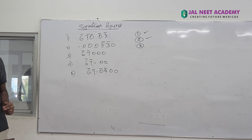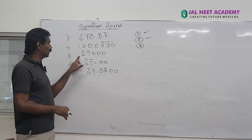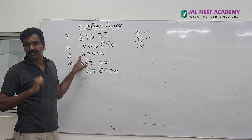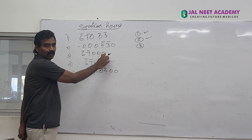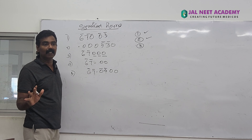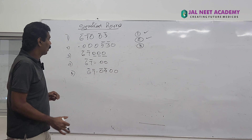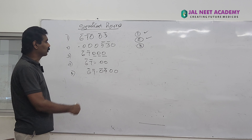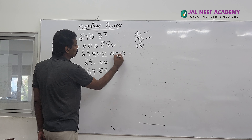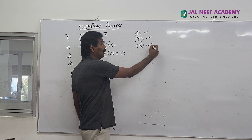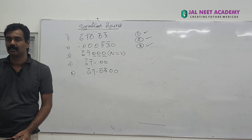Rule 3: in a number without a decimal, the trailing zeros are not significant. The third number is a number without a decimal and has three trailing ending zeros. Those three zeros are not significant, so there are only two significant figures in that number.